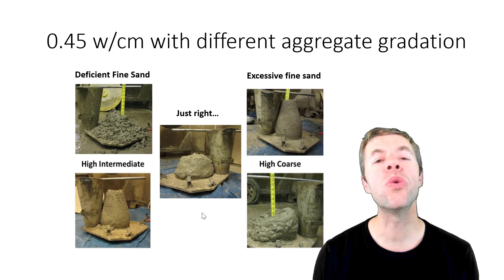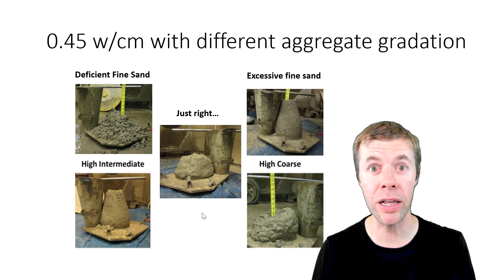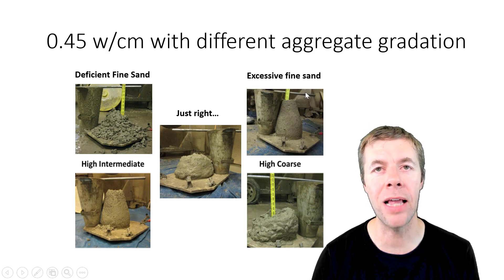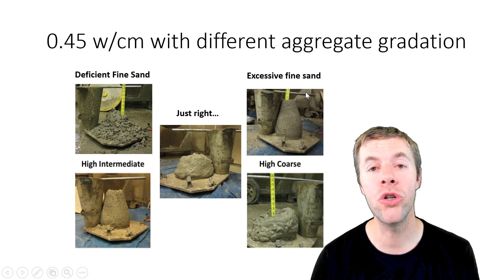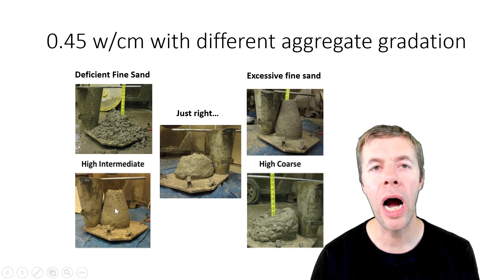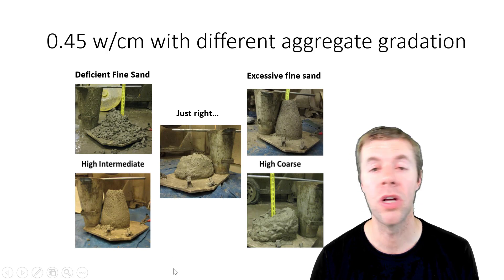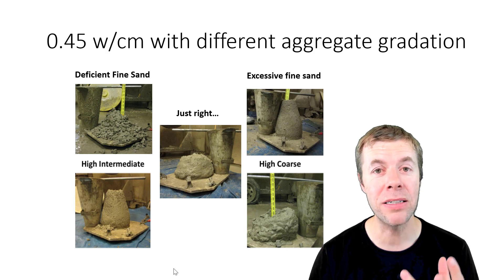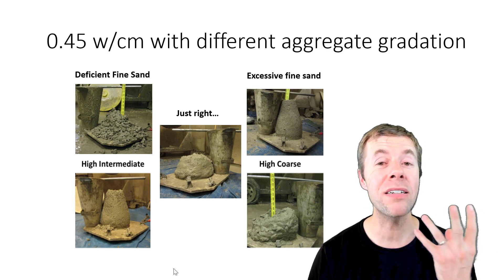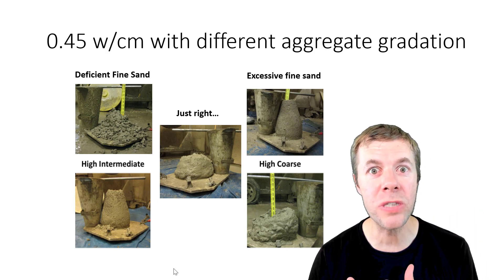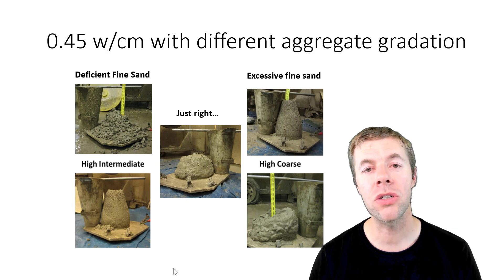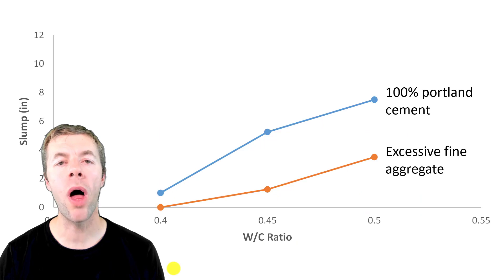However, we could reduce that slump if we wanted to, if that mixture happened to have high amounts of fine sand. This dropped it down to about two inches of slump, or high amounts of intermediate aggregate decreased it to about three inches of slump. So aggregate gradation can impact slump. This means you can have a high slump concrete, but then use these poor gradations to actually stiffen up your mixture.